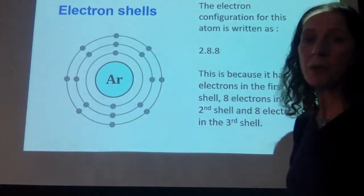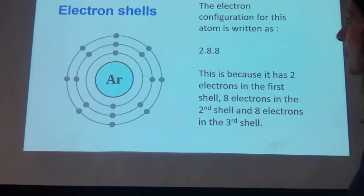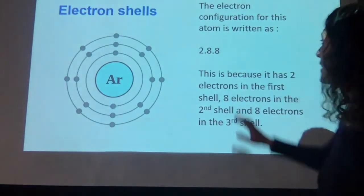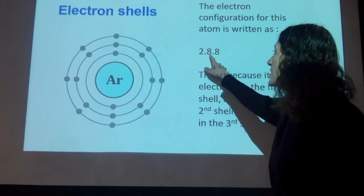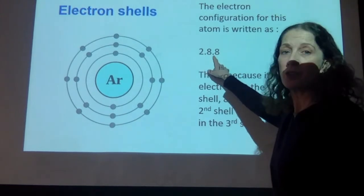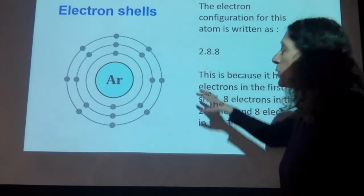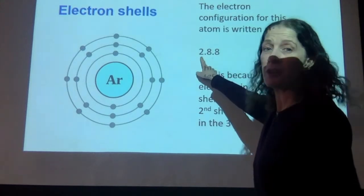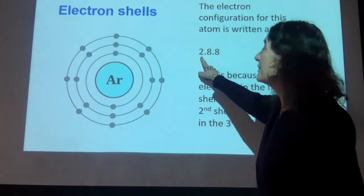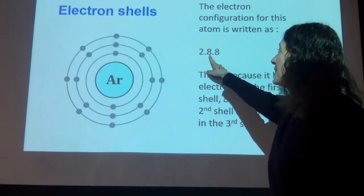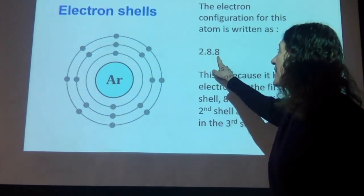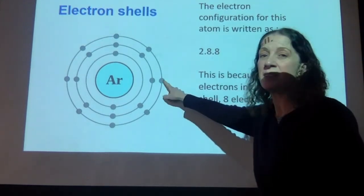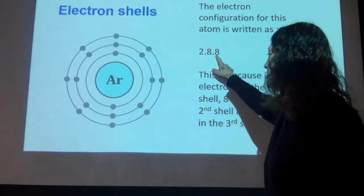The way we write what's called the electron configuration for this argon atom is 2.8.8. What that means is there are two electrons in the first shell, eight in the next shell, and then eight in the outer shell. The last shell is called the outer shell.